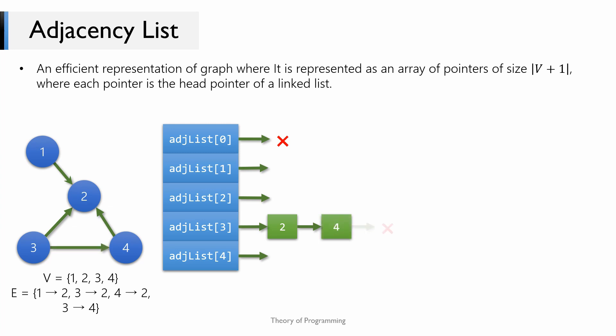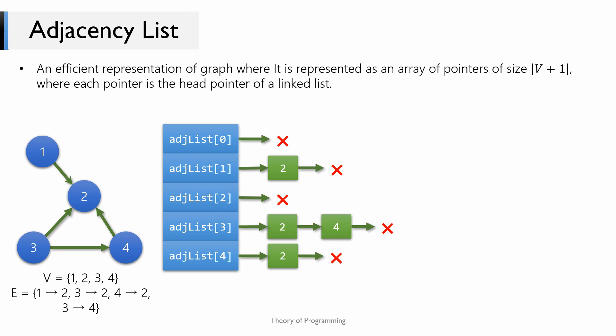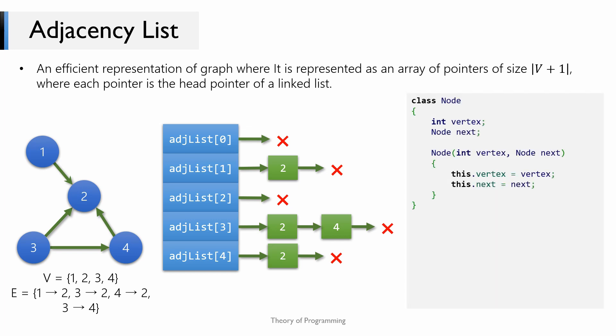Since there are no other adjacent vertices to vertex 3, the linked list ends there. Similarly for vertex 4, vertex 2 is adjacent to it, so the node with integer 2 corresponds to the edge vertex 4 → vertex 2. Vertex 2 has no adjacent vertices, so the linked list belonging to vertex 2 will be empty. The linked list belonging to vertex 1 will have one node which corresponds to vertex 1 → vertex 2. If you have worked with a linked list before, you know that we need to define a node.